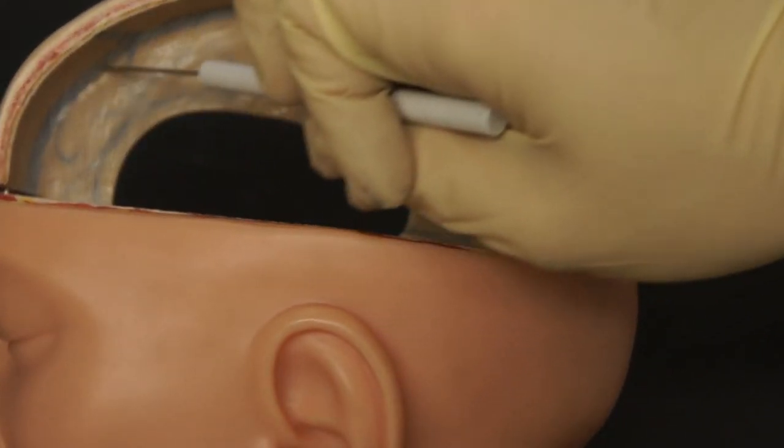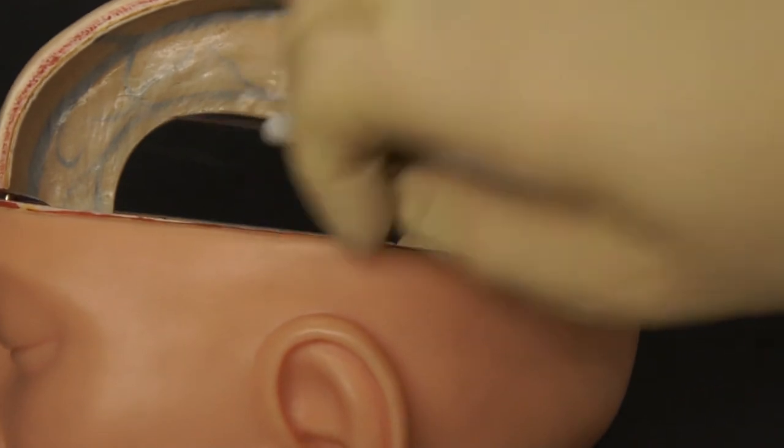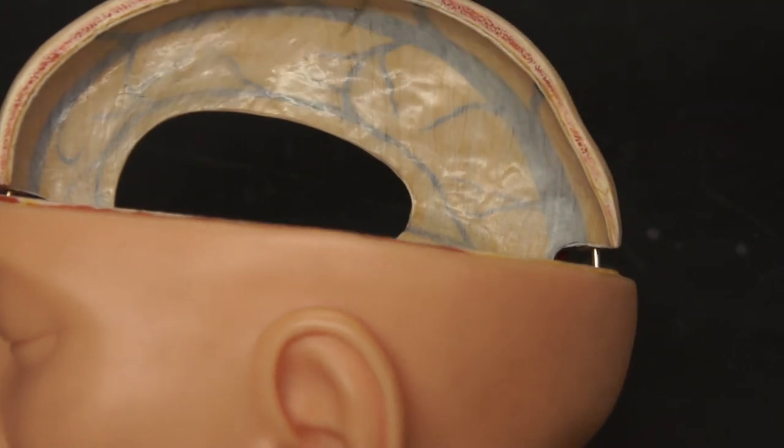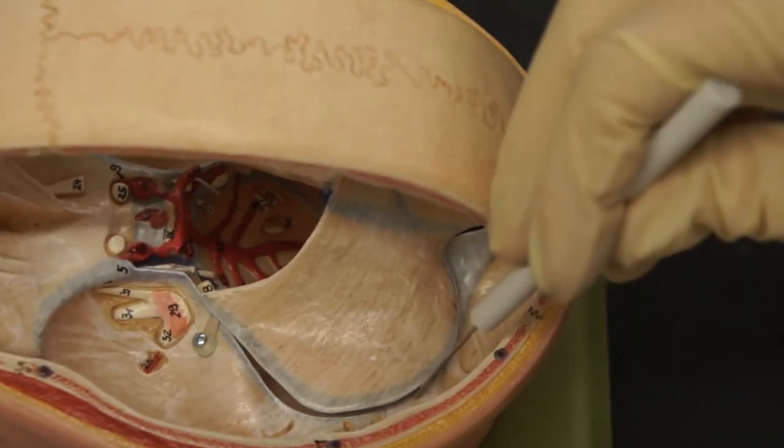If we look up here, we see the superior sagittal sinus, and then this one down here is the inferior sagittal sinus, both in blue. And if we look here, we have the transverse sinus.